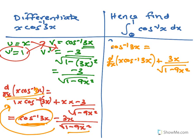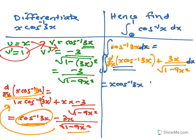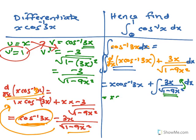Now if we integrate this — the integral of the derivative gives just the function — plus the integral of 3x over root 1 minus 9x², which is a function to a power, or reverse chain rule. So we bring it to the top: x·cos⁻¹(3x) plus the integral — taking the 3 out — of x·(1 minus 9x²)^(−½) dx.